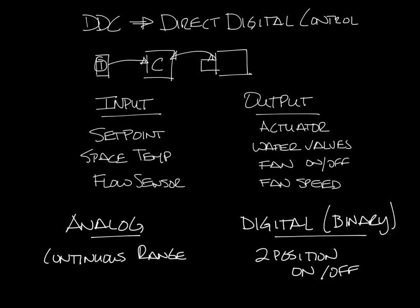Looking at our inputs and outputs, the set point and space temperature would be analog inputs to the controller because they could be any temperature. The pressure signal from the box's flow sensor could be any pressure, so it would also be an analog input. The signal to the actuator and water valves would be analog outputs because they could be a wide range of positions. Turning the fan on and off would be a digital output, but modulating the fan would probably be an analog output.